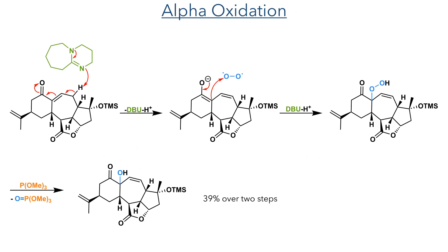Moving forward with the synthesis, the next step was to oxidise the alpha position. The gamma position is firstly deprotonated by DBU, generating an enolate. This then attacks molecular oxygen, forming a peroxide intermediate. This is then reduced by a reaction with trimethylphosphite to produce an alcohol with a 39% yield over two steps.